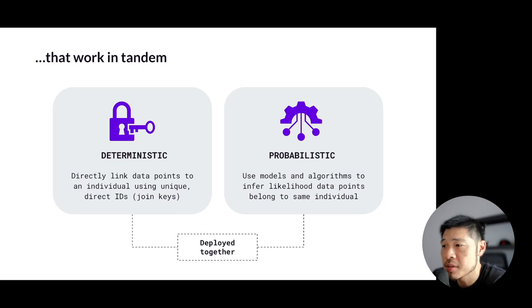This also creates increased match rates because by combining both methods, ID graphs can achieve higher match rates than using either method alone, as probabilistic matching can link records that deterministic methods might miss. The two methods also help balance scale and accuracy, whereas deterministic matching ensures accuracy, or as much accuracy as possible, whereas probabilistic matching provides more scale.